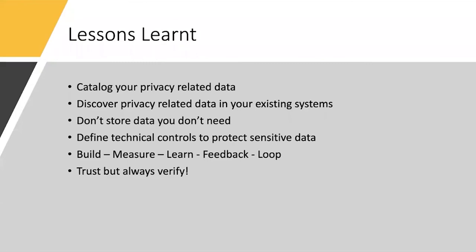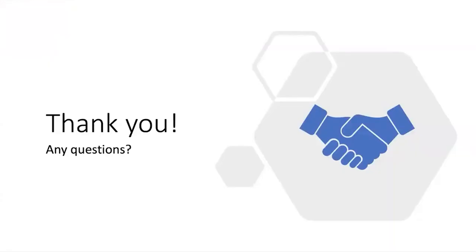Lessons learned: catalog all your data — you cannot protect anything that you don't know about. Discover privacy-related data in your existing systems; there are many tools available, one I personally use is Nessus to identify systems and data. Don't store data that you don't need. Once you've catalogued all your data and created a framework, define technical controls to protect sensitive data. The continuous assurance is summarized as: build, measure, learn, feedback, and loop. In a privacy world it's very important that you trust but also verify — and the only way to verify is to have continuous assurance.